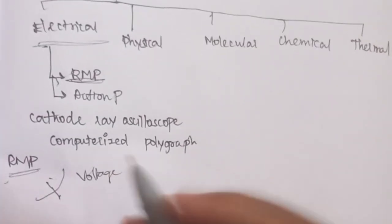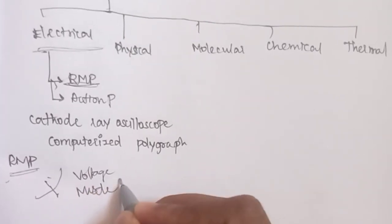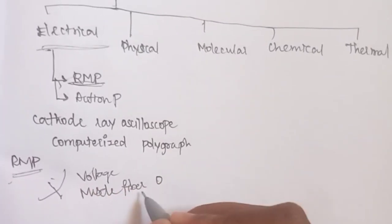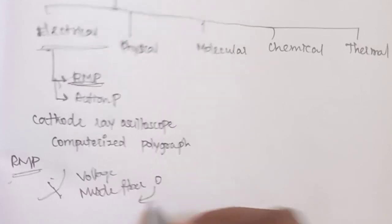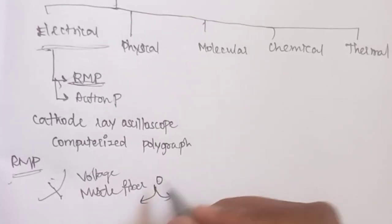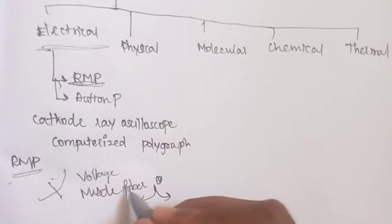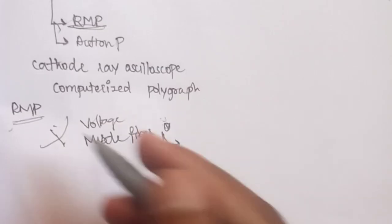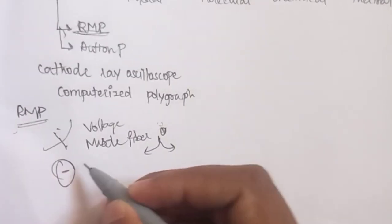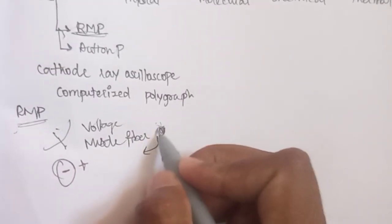If we put a muscle fiber on the surface, it will be 0. That is the interior and exterior. If we put a cell on the surface, it will be a deviation. What is the cell? Negativity. The cell is positive. That is why we have a deviation.